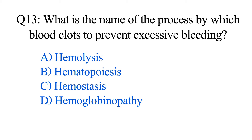Question number thirteen. What is the name of the process by which blood clots to prevent excessive bleeding? Option A: Hemolysis. B: Hematopoiesis. C: Hemostasis. D: Hemoglobin.